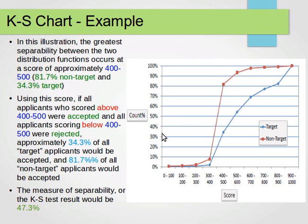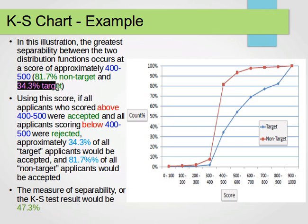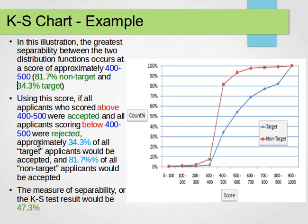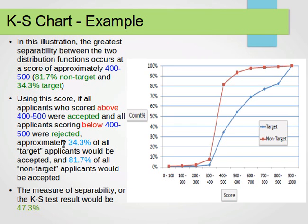At that point, the cumulative values are: approximately 34% for the target and 81.7% for the non-target. To interpret this: if all applicants who scored above 400–500 were accepted and all applicants scoring below were rejected, then approximately 34.3% of all target applicants would be accepted and 81.7% of all non-target applicants would be accepted — which is not great, but this is how you interpret the diagram.